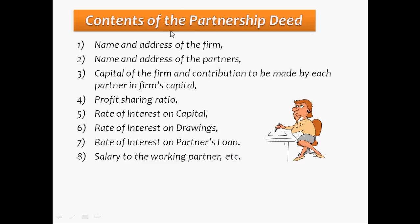Now let's see what we include in the partnership deed. These are some important points: name and address of the firm, name and address of the partners, capital of the firm and contribution to be made by each partner in the firm's capital, profit sharing ratio, rate of interest on capital, rate of interest on drawings, rate of interest on partner's loan, salary to the working partner, etc. Actually, a partnership deed is a list of internal rules which partners will follow while running the firm's business.